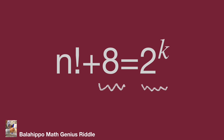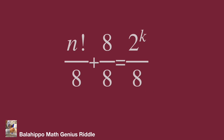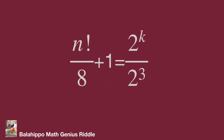So n factorial will be divisible by 8. Therefore, we divide 8 into each term of the equation. The term 8 over 8 equals 1, and 8 equals 2 cubed. So it becomes: n factorial over 8 plus 1 equals 2^k over 2^3, which equals 2^(k−3).